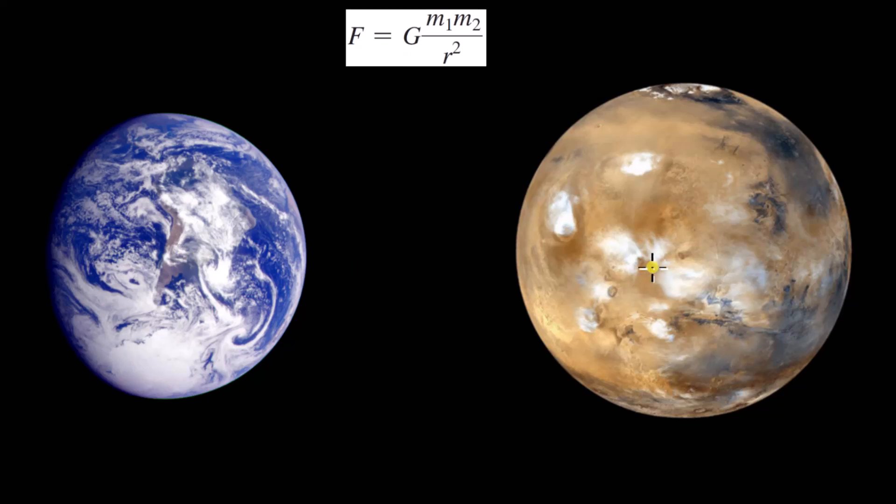So what would the gravitational force be between these two planets? We know that because these two planets have mass, they are exerting a gravitational force on each other. But the first question is, where do we apply this force? Well, a gravitational force is something we call a body force.